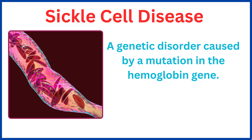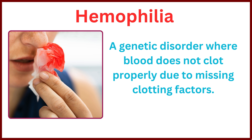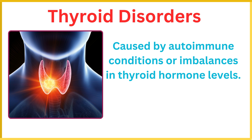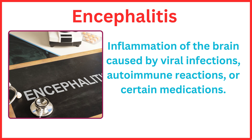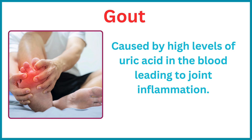Sickle cell disease is a genetic disorder caused by a mutation in the hemoglobin gene. Hemophilia is a genetic disorder where blood does not clot properly due to missing clotting factors. Thyroid disorders are caused by autoimmune conditions or imbalances in thyroid hormone levels. Meningitis is caused by viral or bacterial infections leading to inflammation of the protective membranes covering the brain. Gout is caused by high levels of uric acid in the blood, leading to joint inflammation.